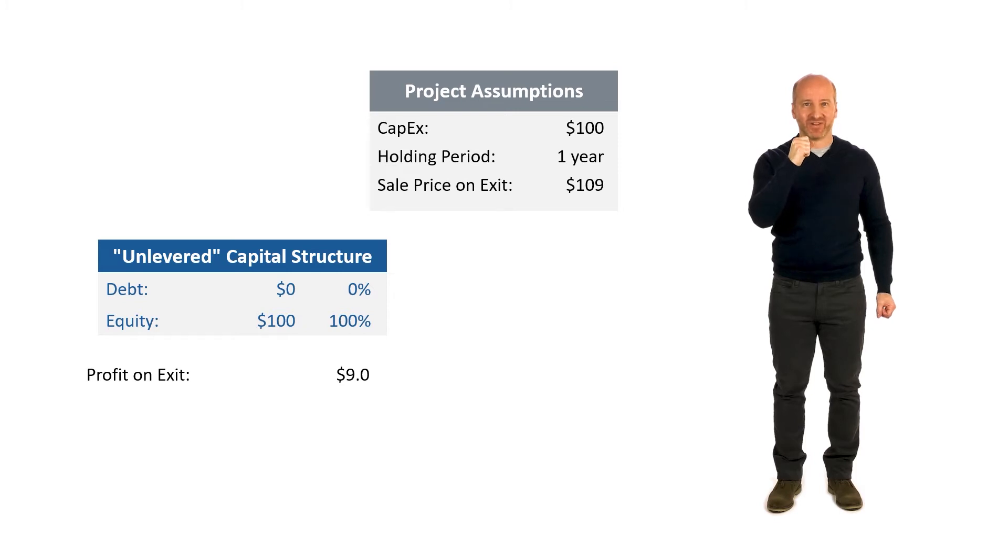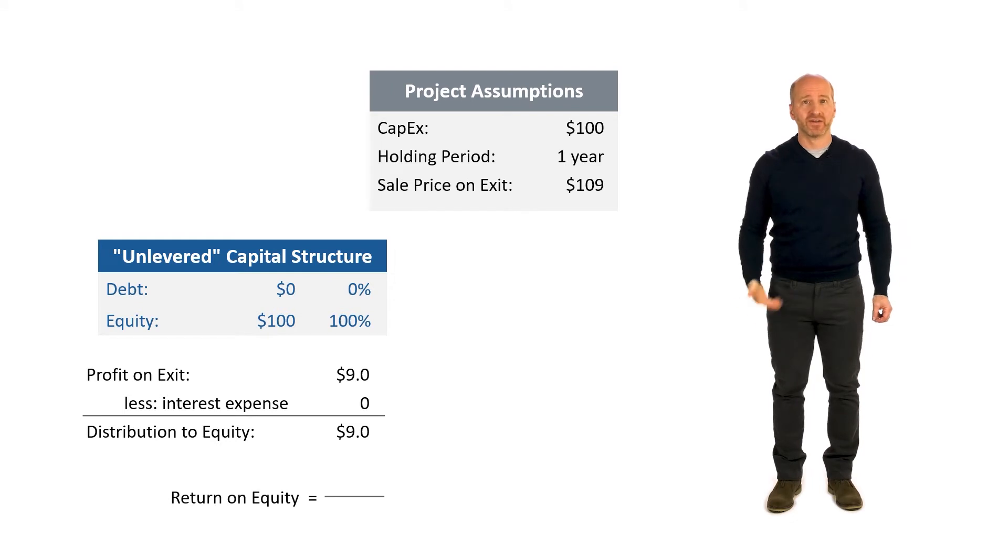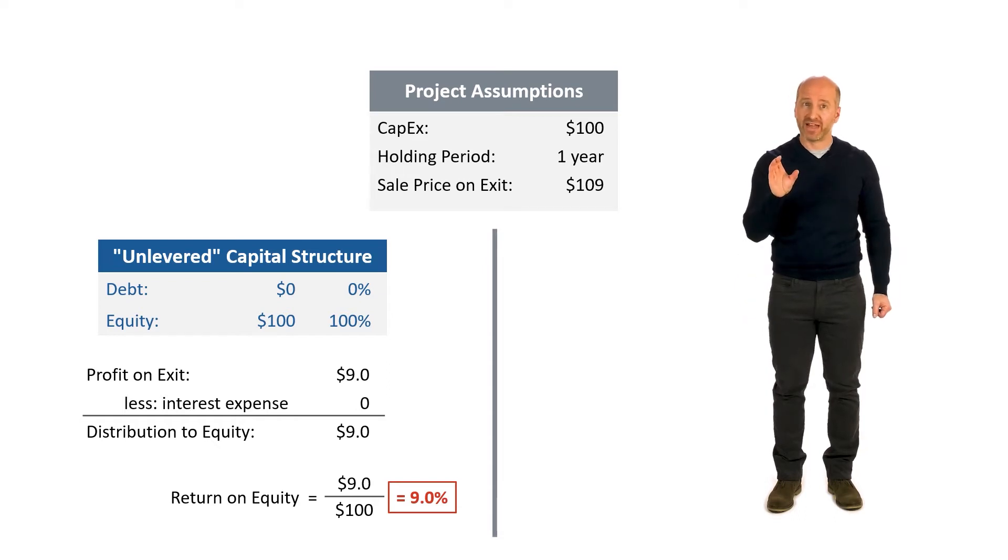$109 minus $100 that was invested and we didn't borrow any money. So how would we calculate the return on equity? We would look to the $9 profit as the numerator, and the denominator is the total amount of equity that was invested, $100. So 9 divided by 100 tells us there would be a 9% return on equity for this investment if the project is unlevered.